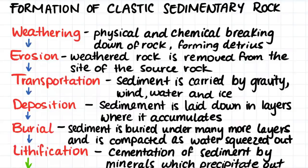Weathering is the breaking down of rock, which is then removed through erosion. Weathering can either be physical or chemical, and it forms something that we call detritus, which is just the broken up rock. Erosion is then the removal of this weathered rock from the site of the source rock. The detritus is then transported by gravity, wind, water, or ice, and it is then deposited or laid down in layers where it is able to accumulate.